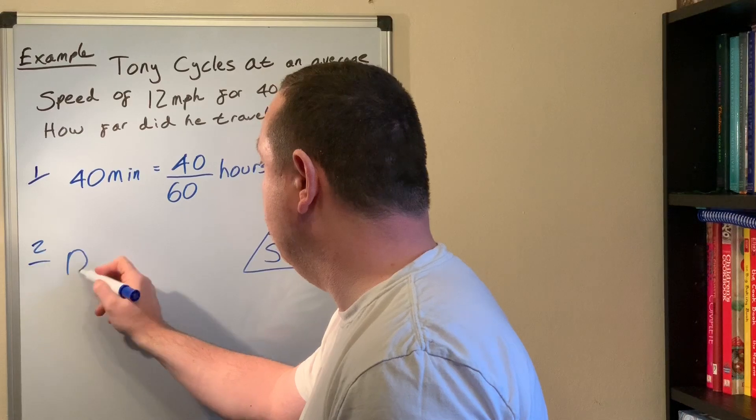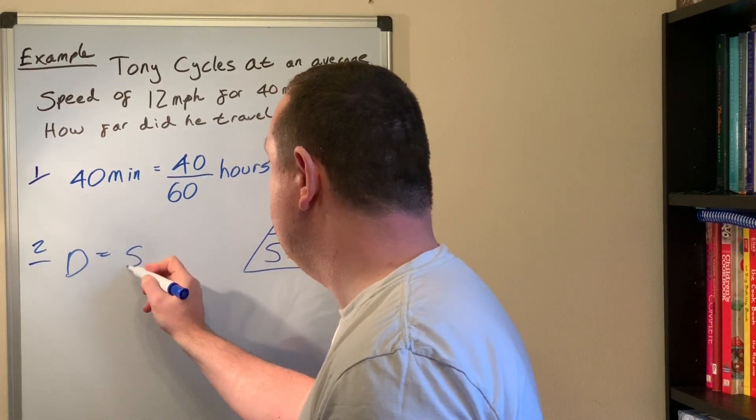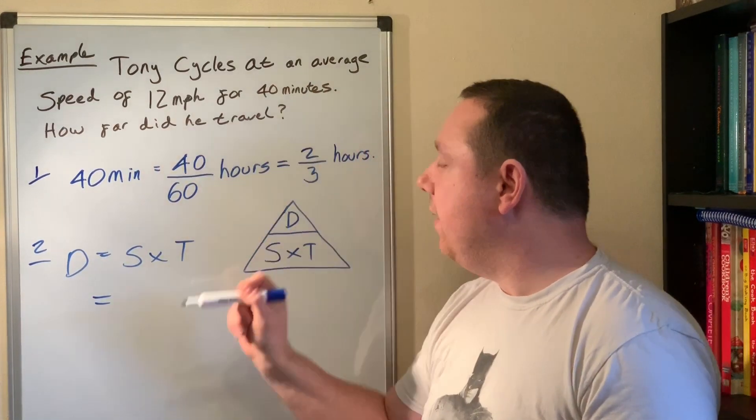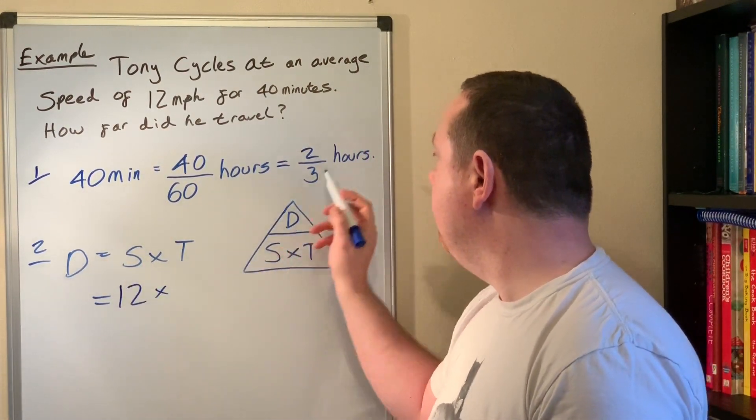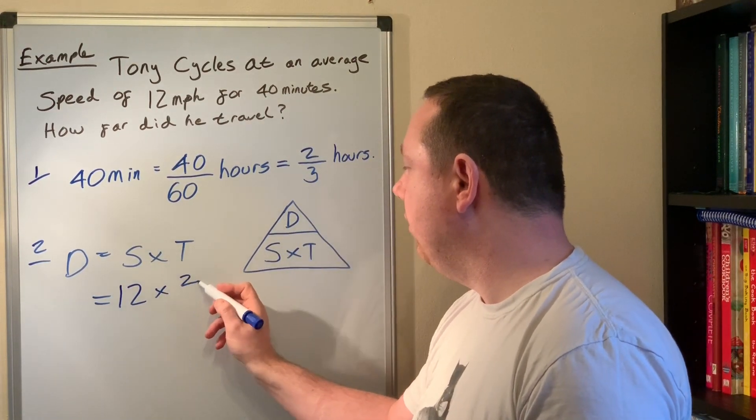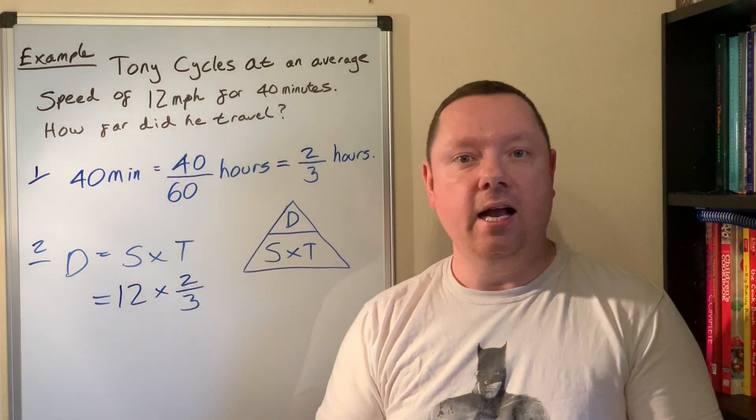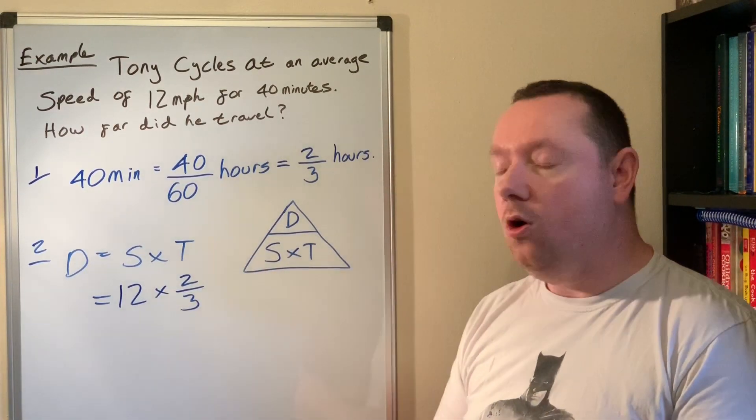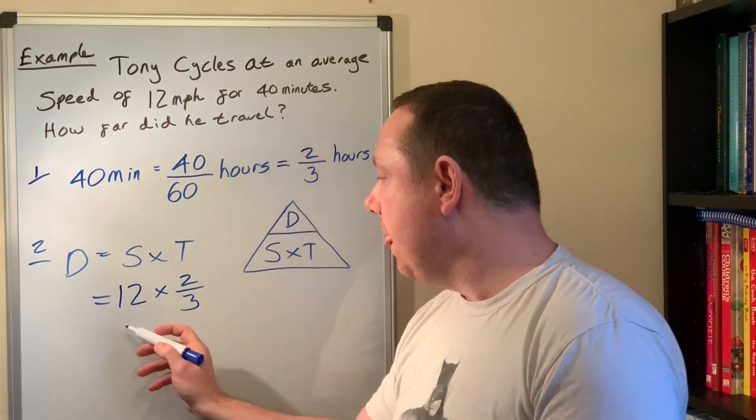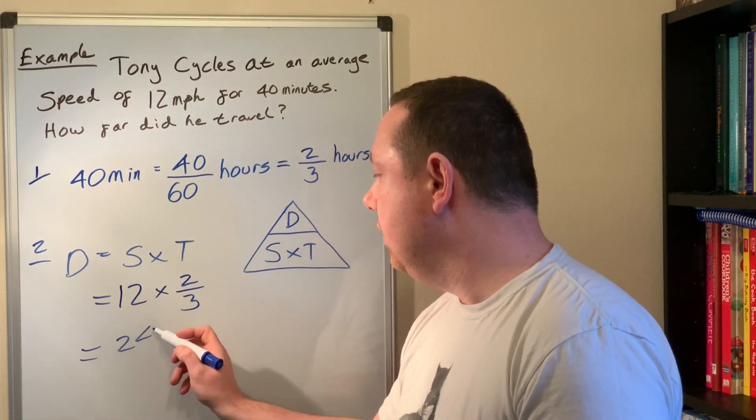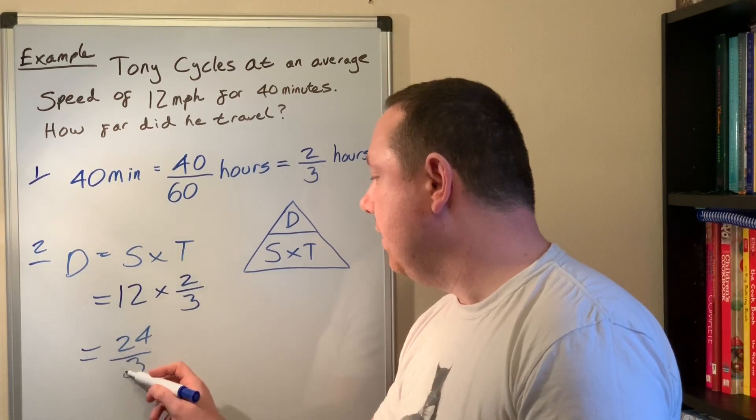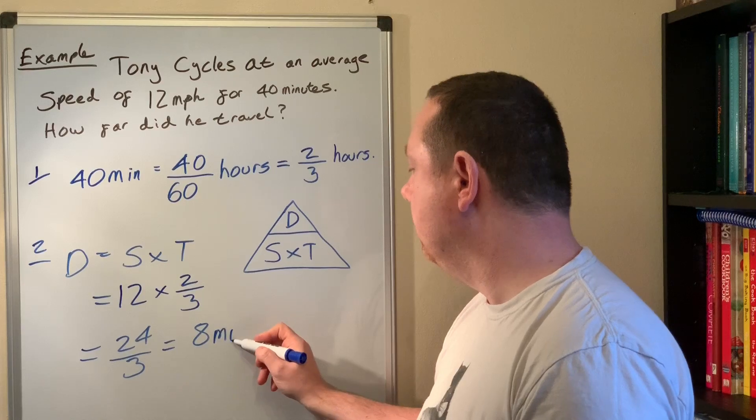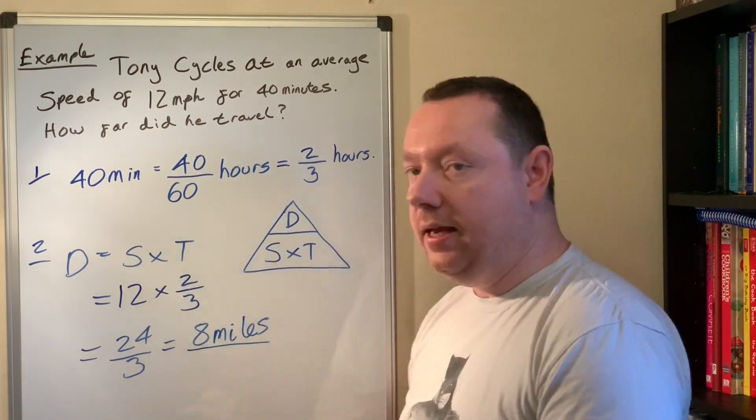So step two, I write down distance equals speed times time and I substitute in what I've got: 12 miles per hour times my new time which is 2/3 of an hour. Times by a fraction is the same as doing a fraction of an amount. A quick reminder of that, it means you times by the top and divide by the bottom. So 12 times 2 is 24 divided by 3 which is 8, and the units will be miles because it was miles per hour. So the answer we get is 8 miles.